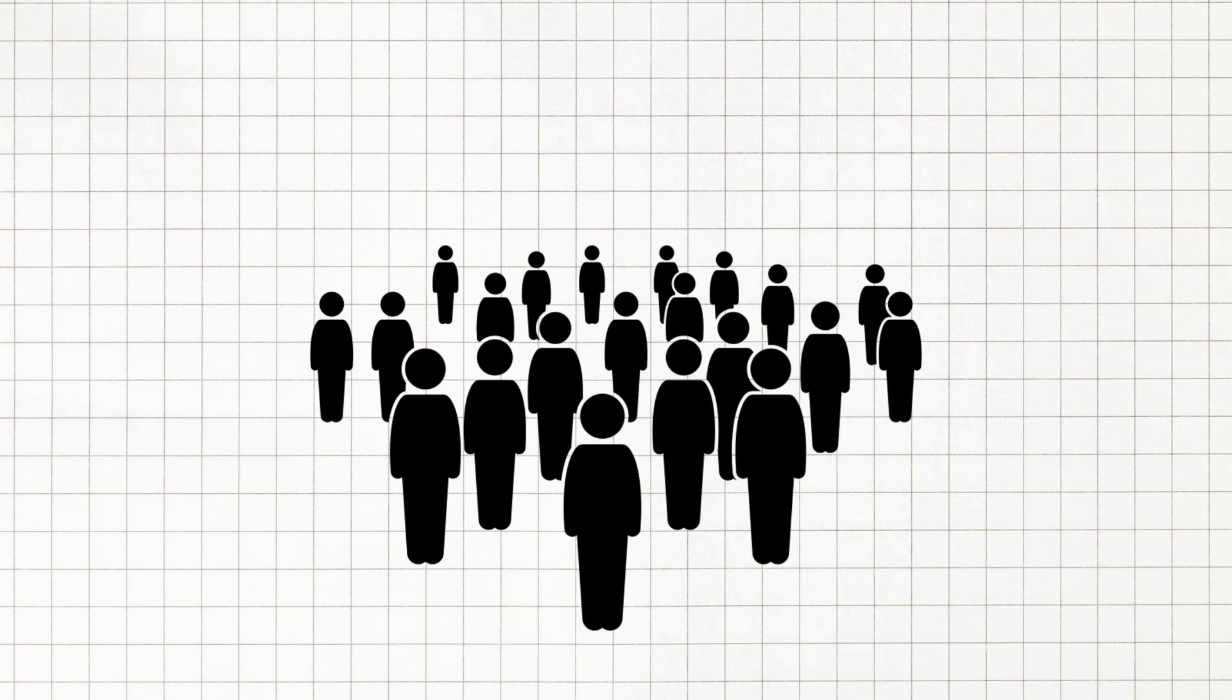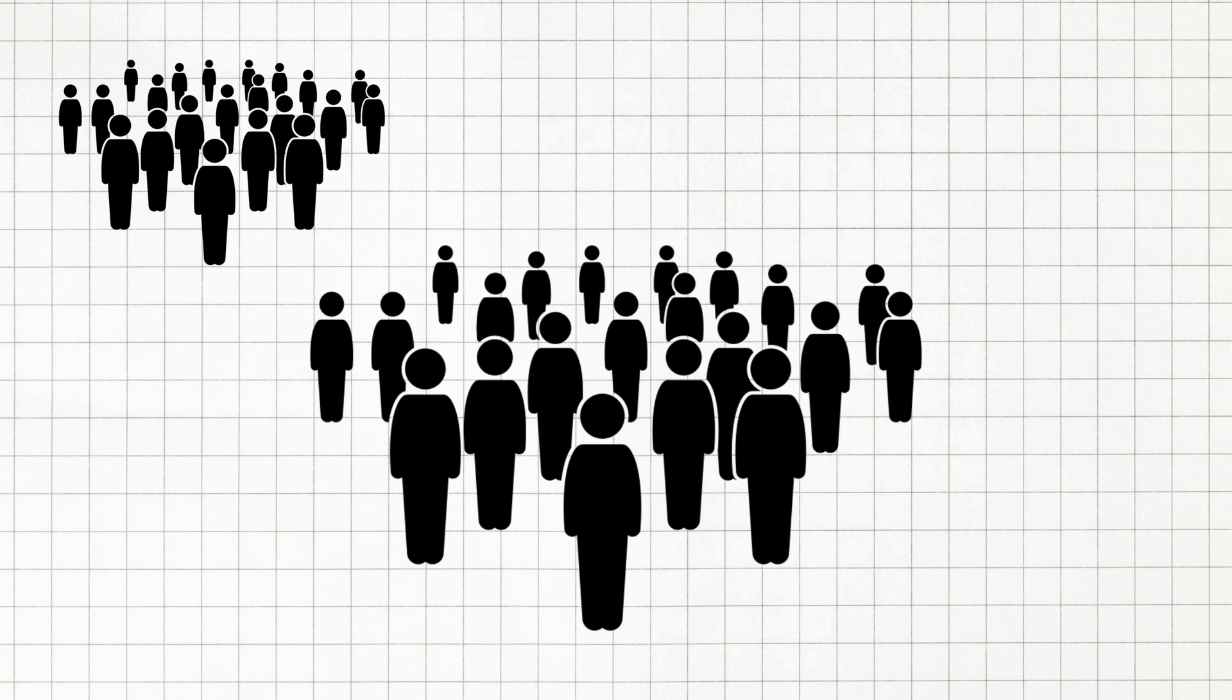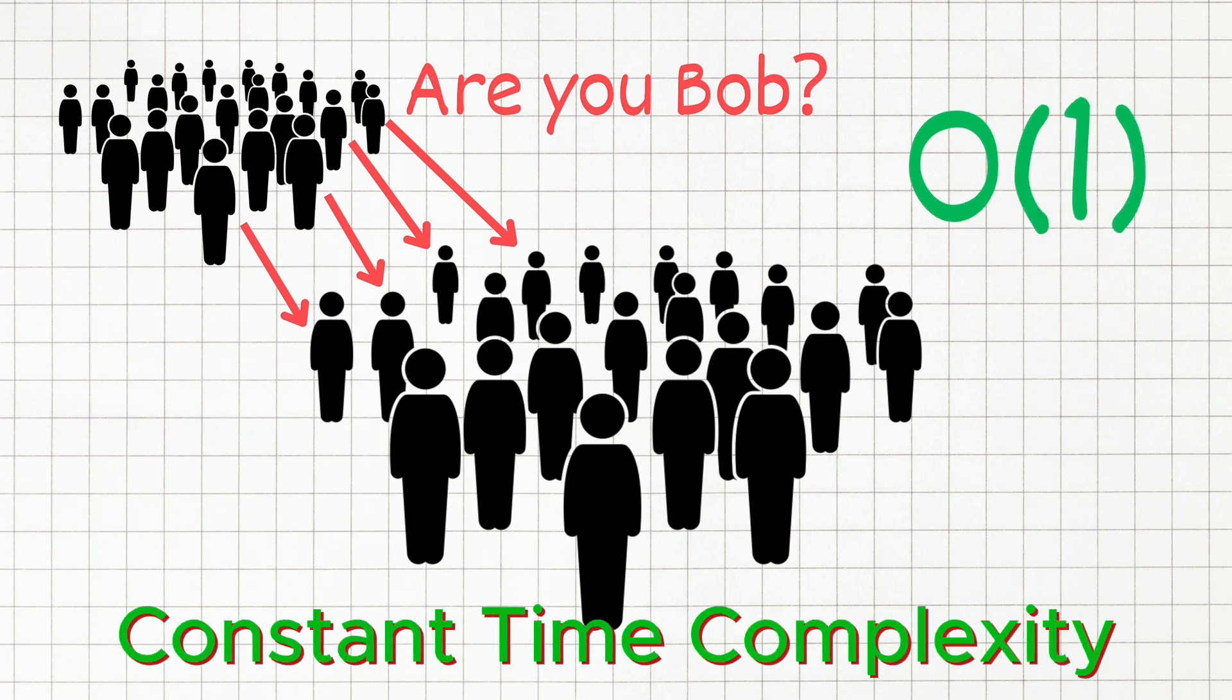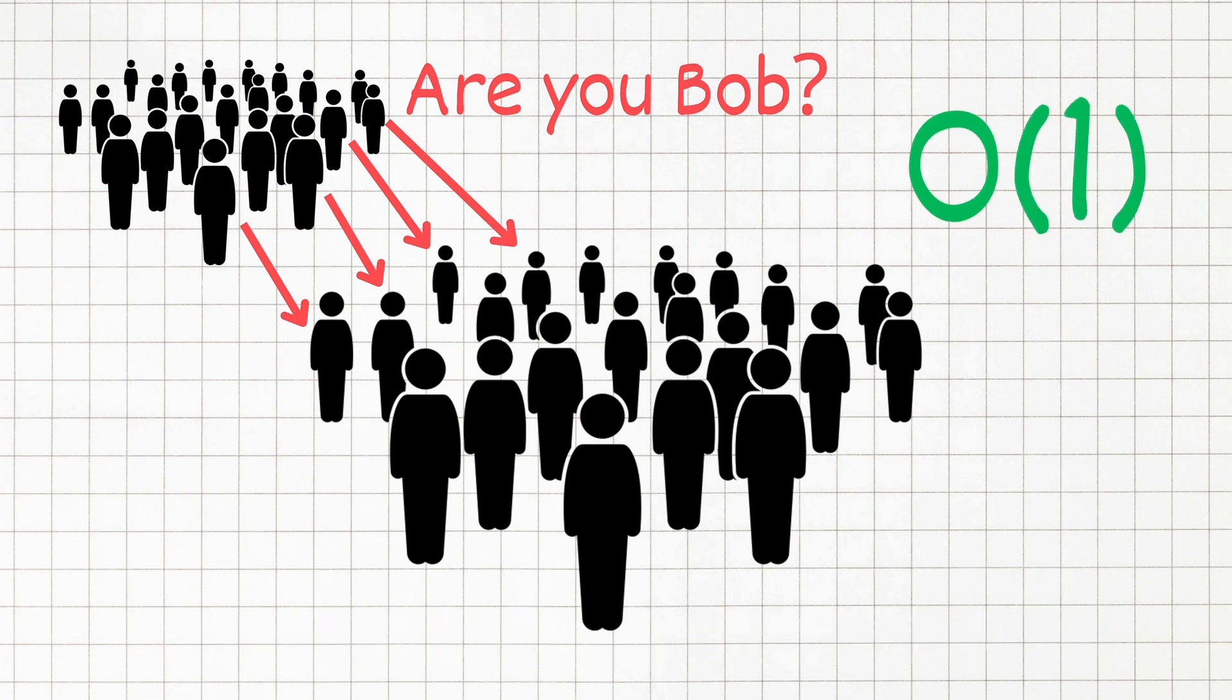Now let's say you could clone yourself, until there are as many of you as there are people in the crowd. You could then ask everyone at the same time if it's Bob. This scenario represents O of 1, or constant time complexity. Because regardless of the crowd's size, it takes the same amount of time to find Bob.